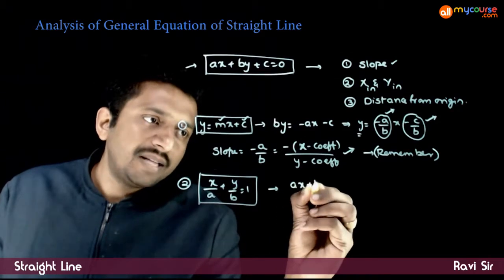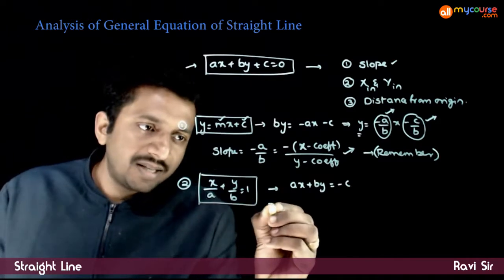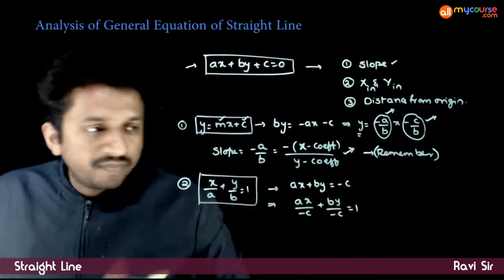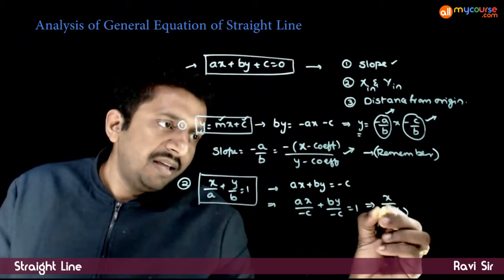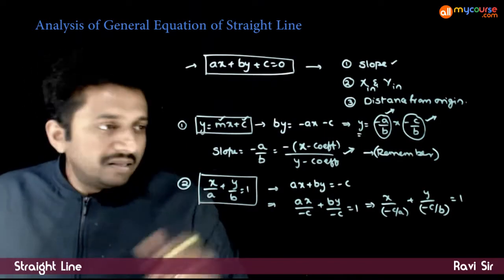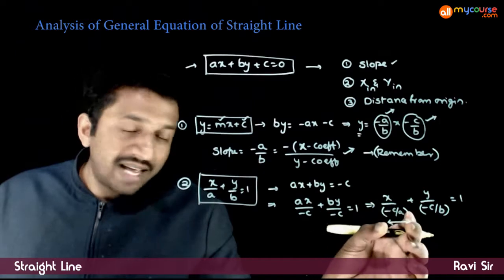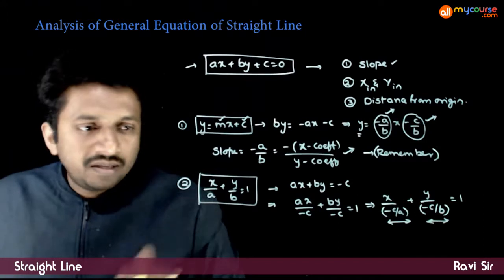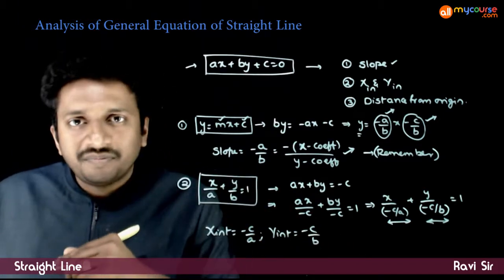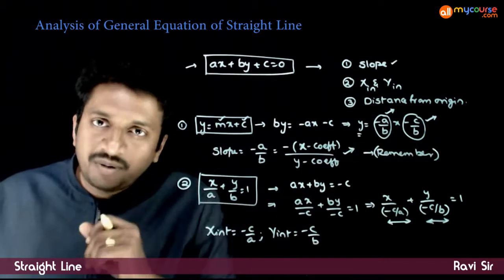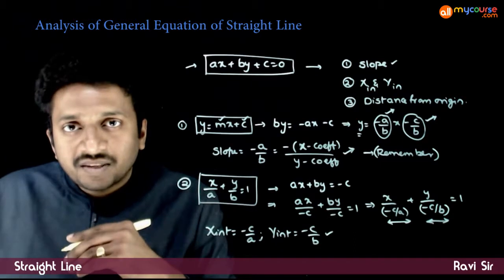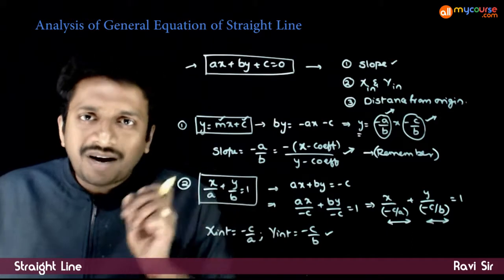Let us convert ax plus by plus c equals 0 into intercept form. Rearranging: ax plus by is equal to minus c. Dividing both sides by minus c gives ax by minus c plus by by minus c is equal to 1. This implies x by (minus c by a) plus y by (minus c by b) is equal to 1. So the x-intercept is minus c by a and the y-intercept is minus c by b. Whatever method you use, you will always get the same answer as long as you follow the right method.